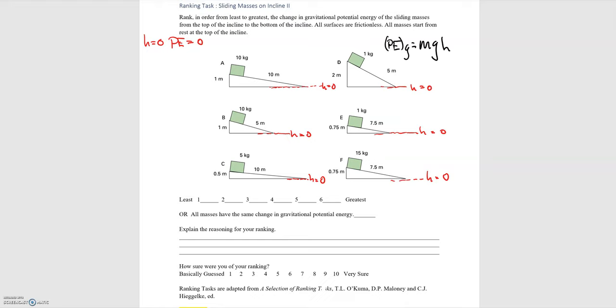Now that we have an expression for the potential energy and we have our zero point, we can just go ahead and rank them. We can solve for their potential energies. I'm going to approximate g to be 10 meters per second squared. You can use 9.8; I just want to be able to solve this in my head.